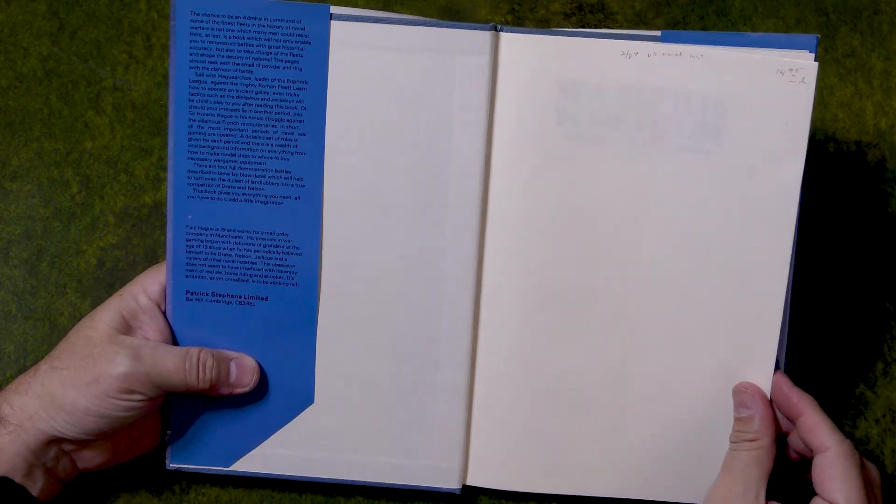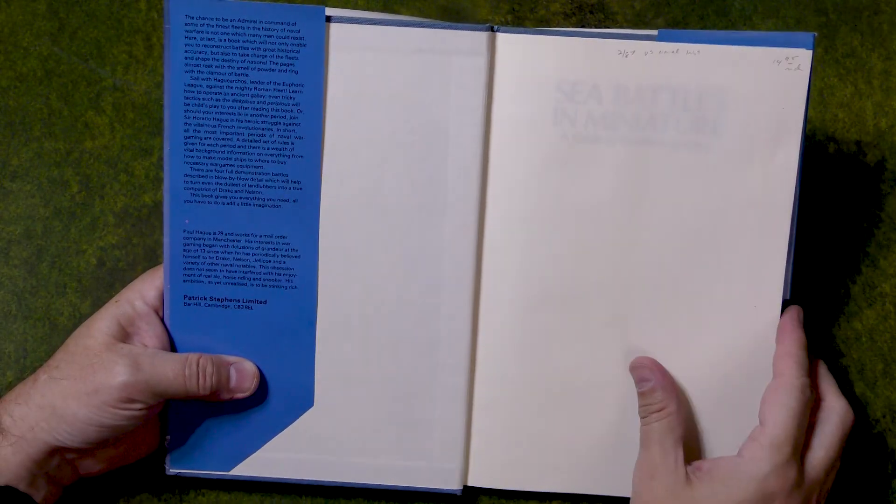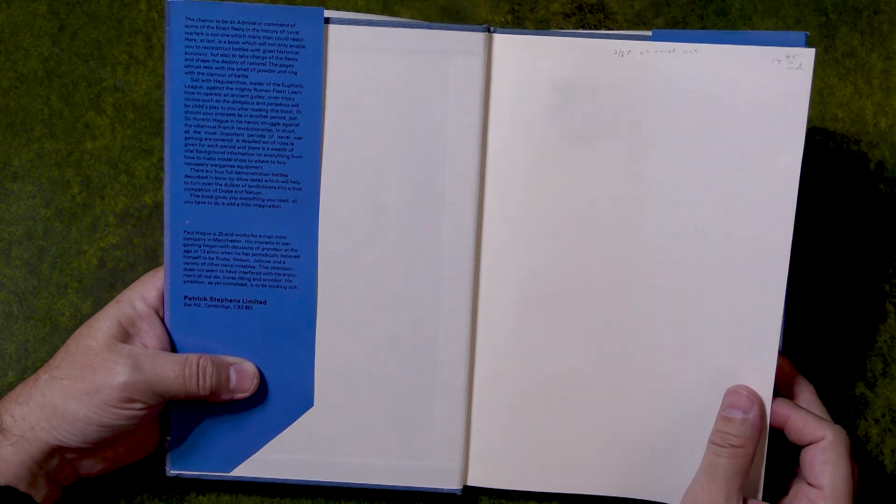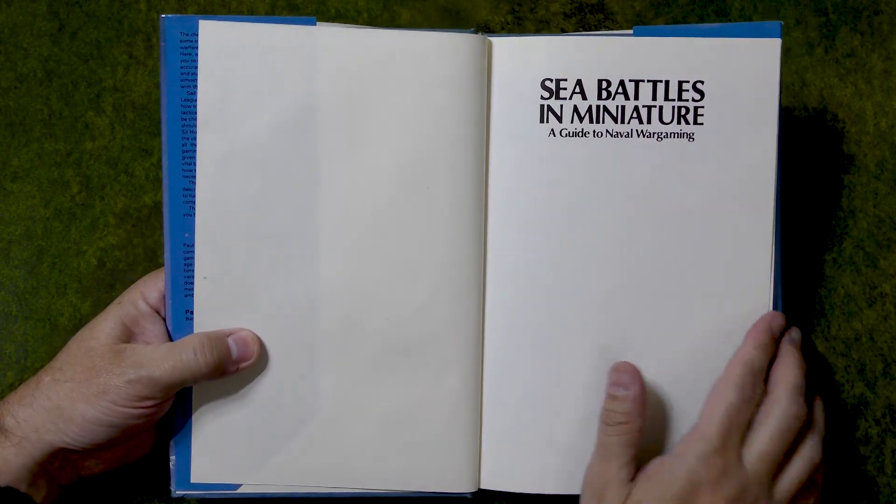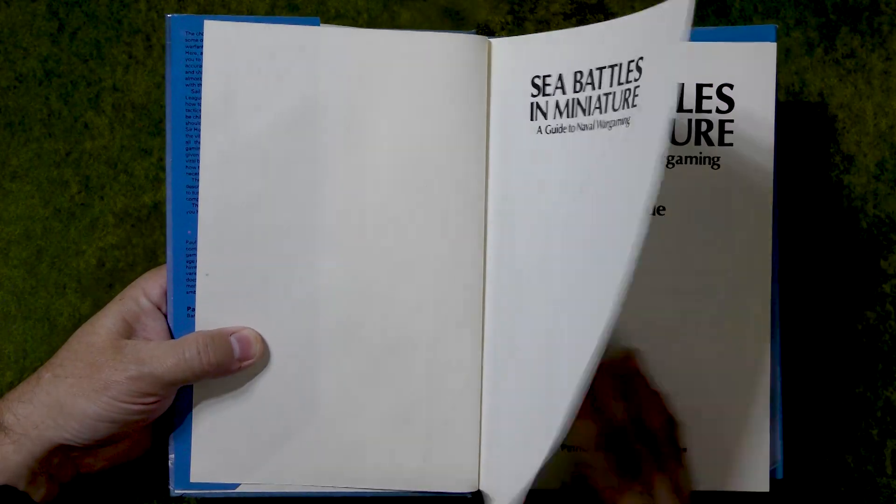And it says, Paul Haig, the author's 29 when this was written. So, he's probably in his 70s now. Paul, if you're watching, shout out to you. This was a great book and I really enjoyed it.